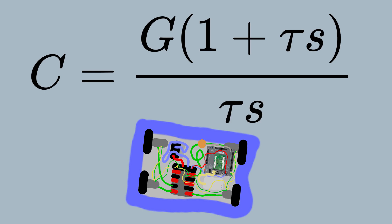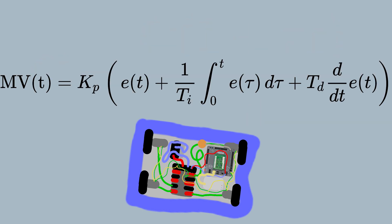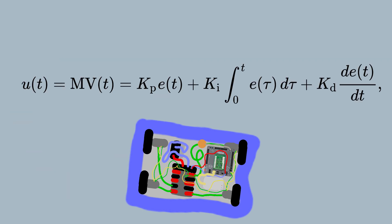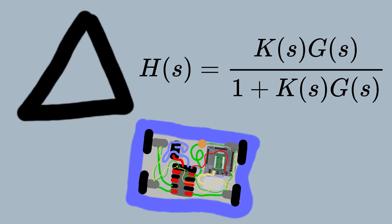The variation being the difference between where the robot is and where it wasn't. If variation is considered to be a significant factor, it too may be corrected by the PID. However, the robot must also know where it was. The robot PID scenario works as follows: because a variation has modified some of the information that the robot has obtained, it is not sure just where it is.